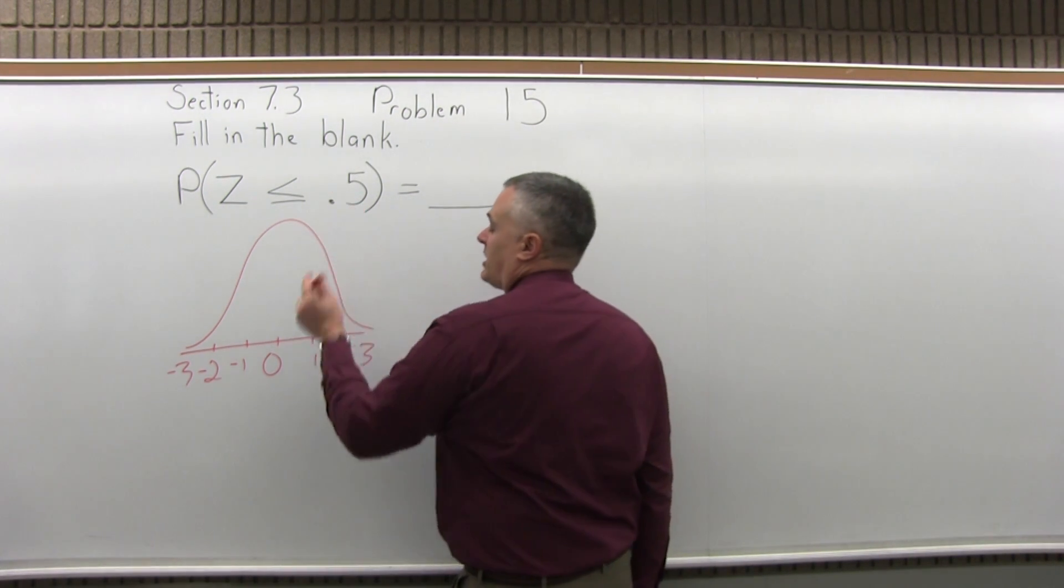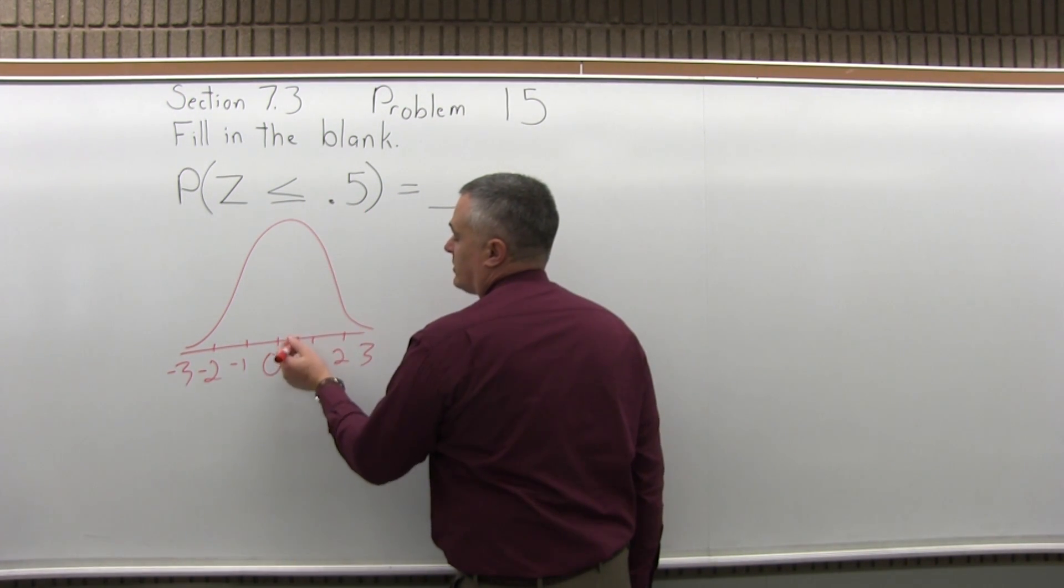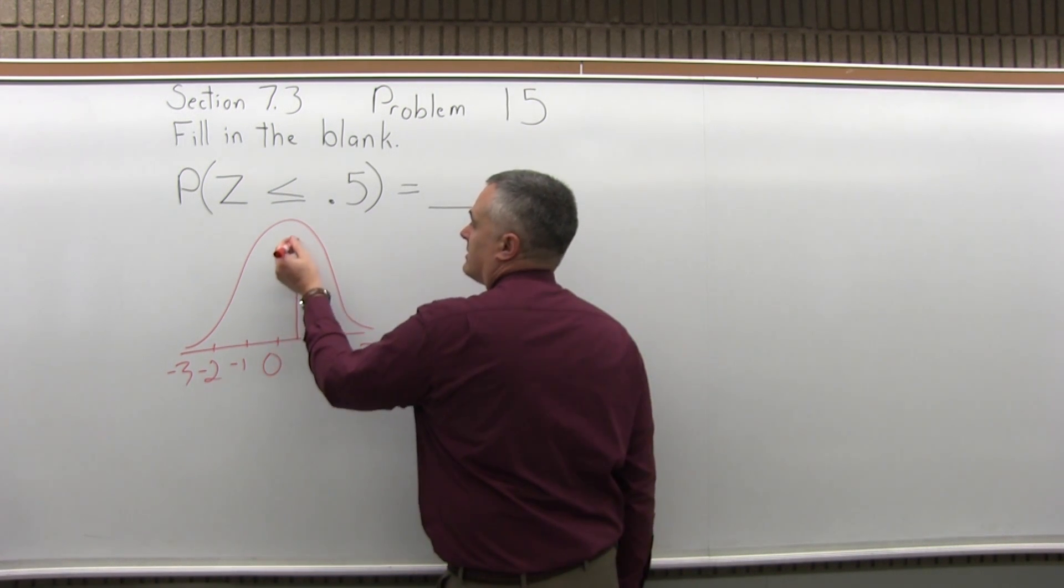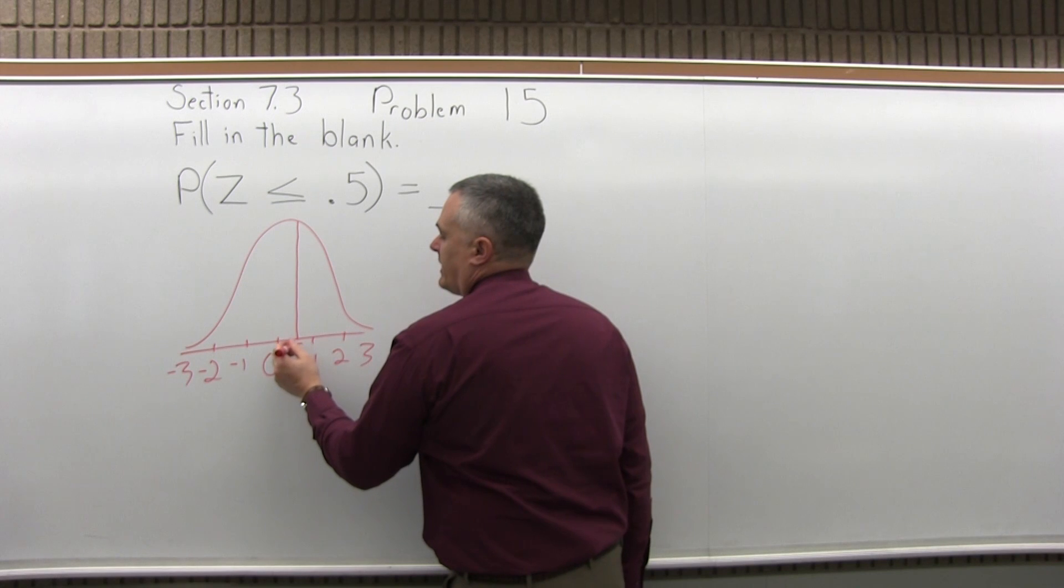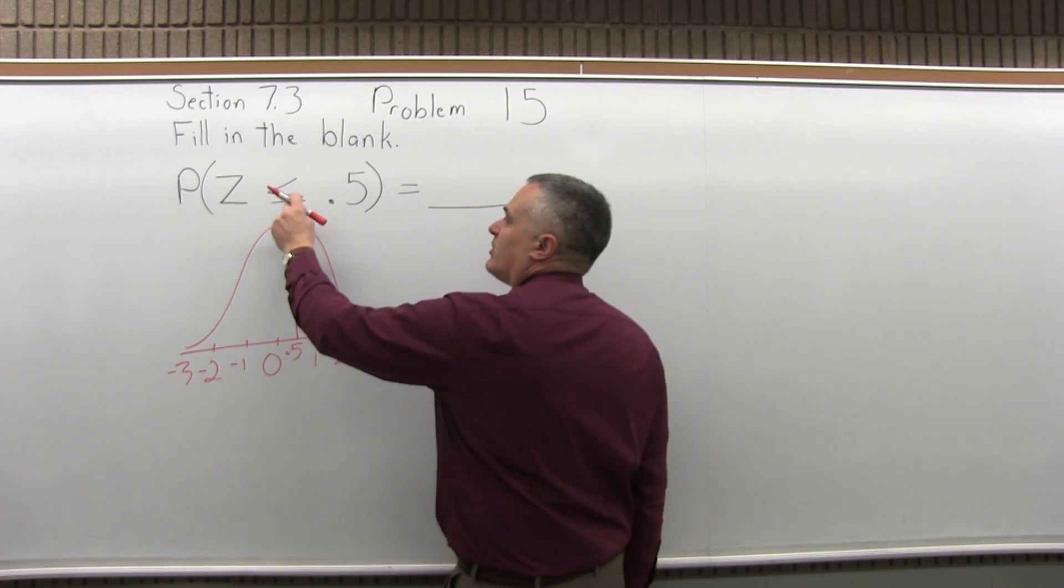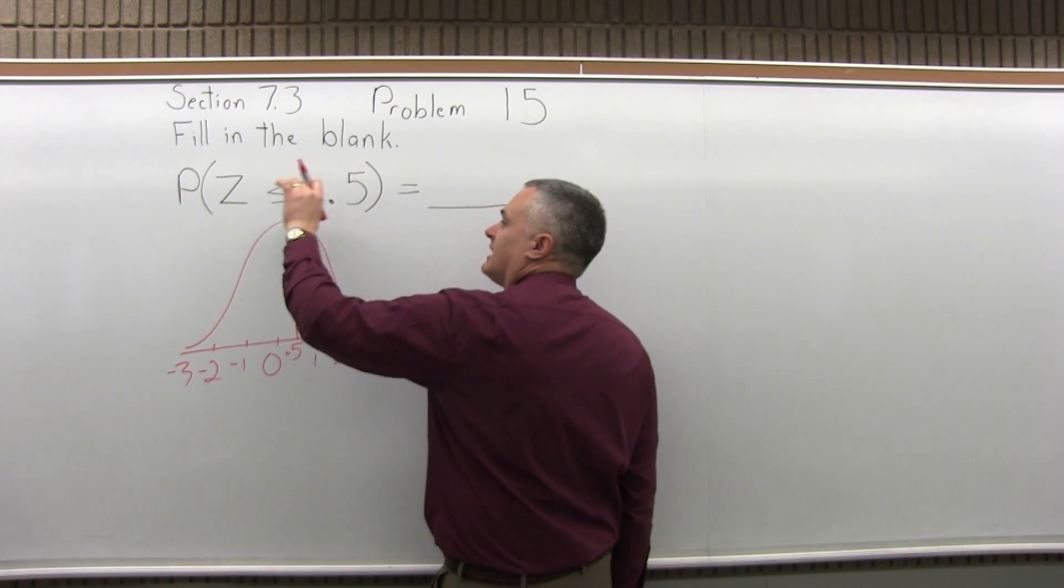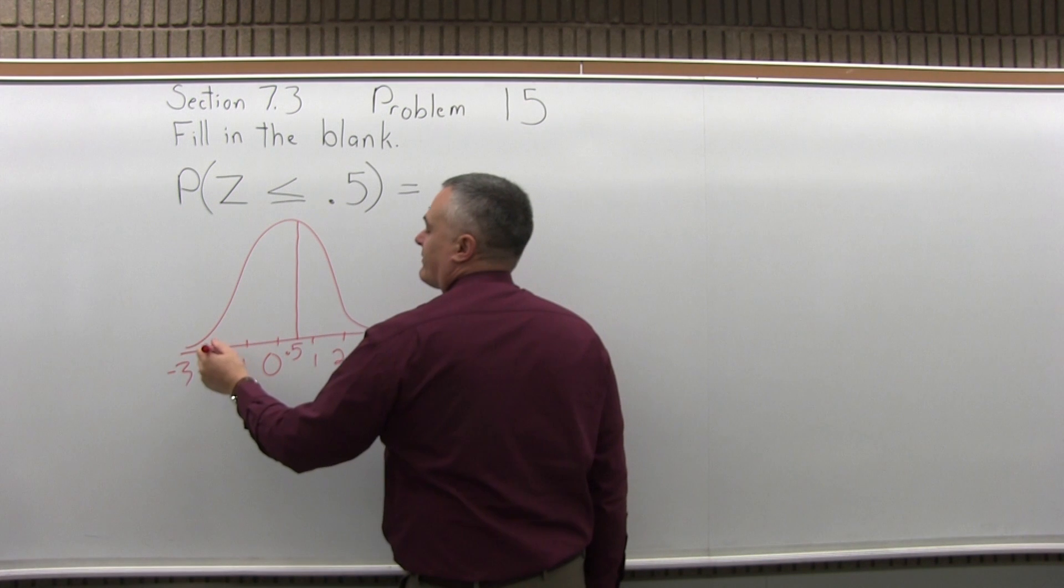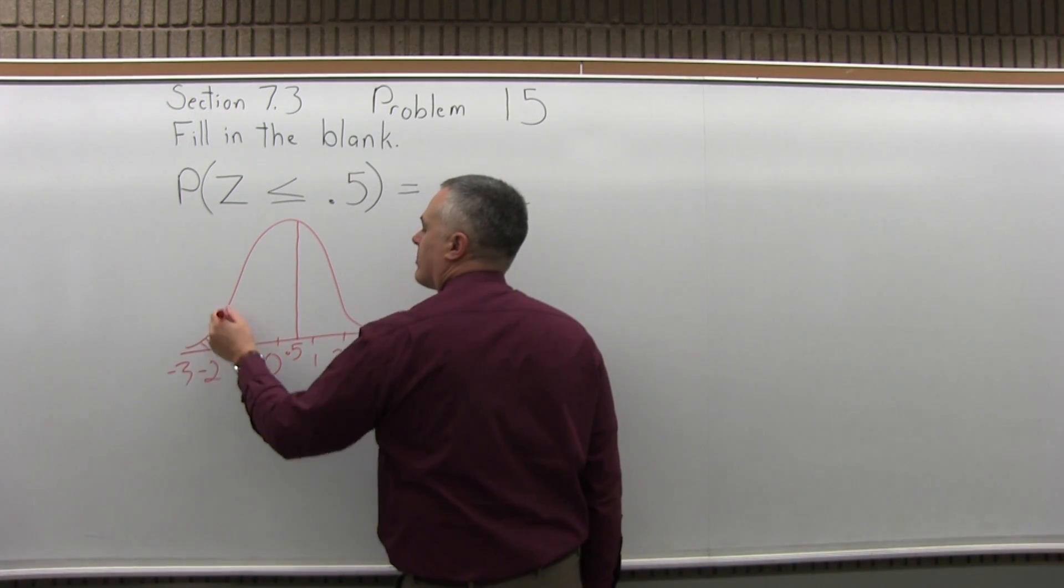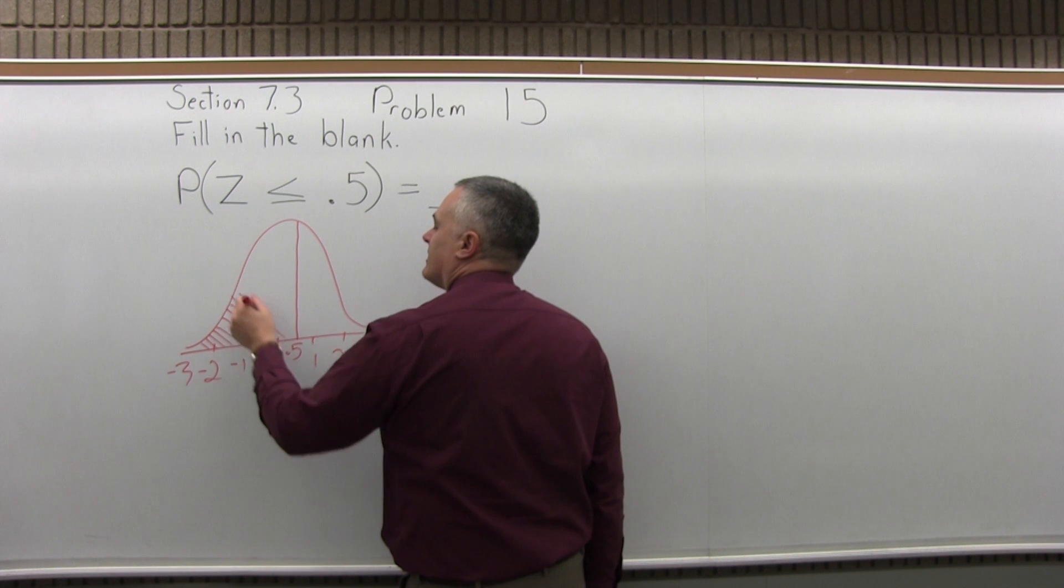So .5, it's positive .5, so right between the 0 and the 1 would be where the .5 is. .5, and we want the area that is less than .5 or to the left of it, what comes before it. So I'll shade that in.